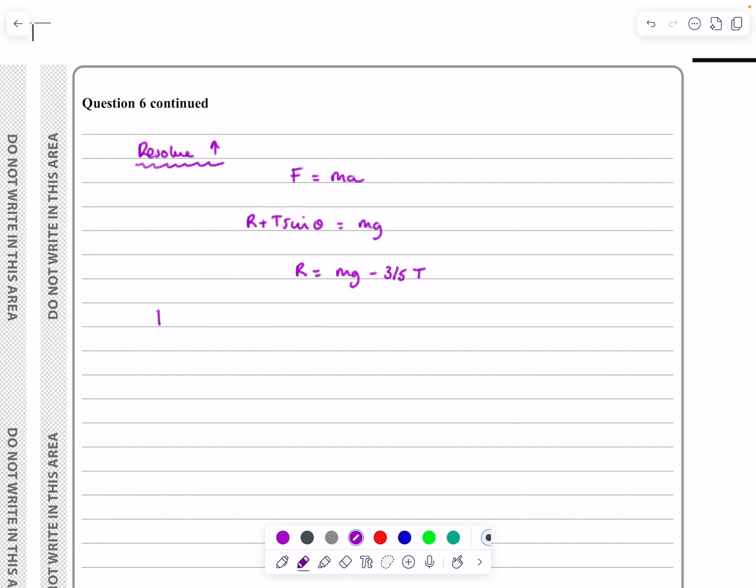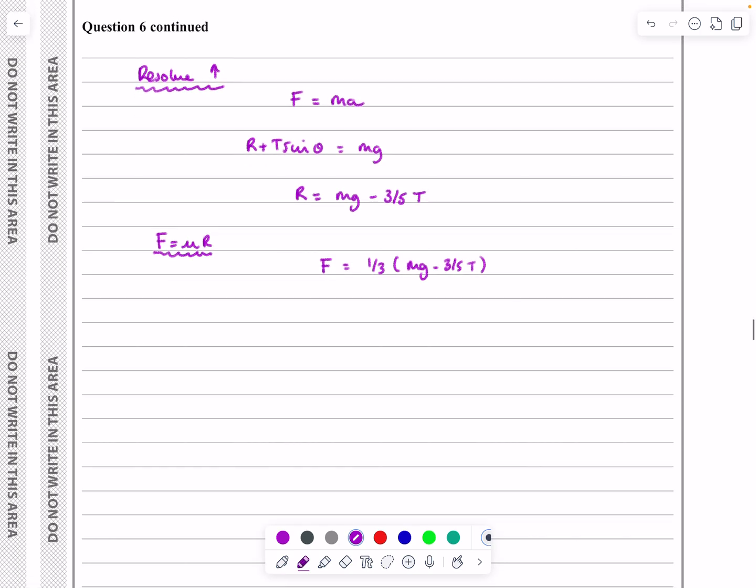The whole point of doing that was so I could get a representation for my friction. F equals mu R, so F is going to be one-third times mg minus three-fifths T. I'm not going to do any more than that at the moment. As I said right at the start, the whole point about doing that was so that I can now resolve horizontally.